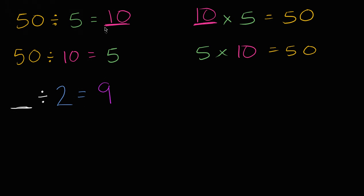Well, one way to think about it, and if we just follow here, if you said 50 divided by 5 is 10, you could say 10 times 5 is 50. So right over here, we could say, well, 9 times 2 must be equal to blank. Well, we know what 9 times 2 is. That is 18. So this must be 18.